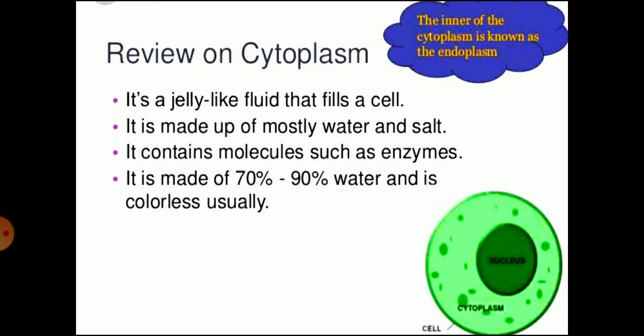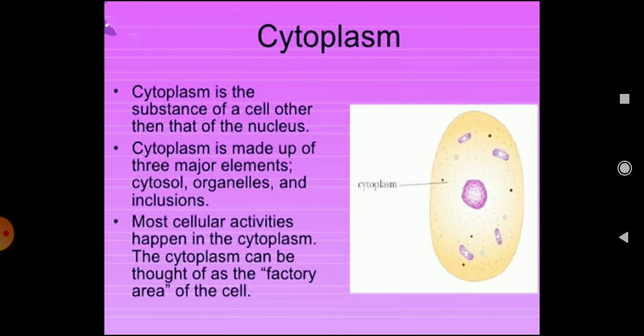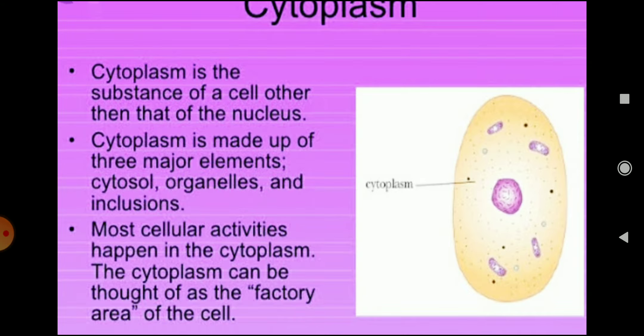What is its review? Basically it is a jelly-like structure which fills the whole cell, which is made up mostly of water and salt and it contains molecules which are enzymes. It is made up of 70-90% of water and usually colorless. This is the substance of a cell other than the nucleus. Whatever represents there, all these things will be considered under cytoplasm.